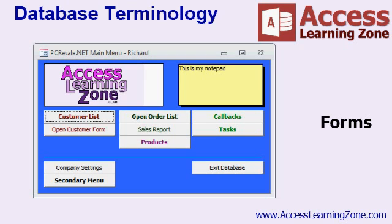Your forms can also contain drop-down lists, so users can select data. Command buttons allow us to perform tasks such as opening other forms or finding records. In fact, you can turn a form into a main menu for other forms. The benefits of working with forms go on and on, but essentially you'll build the interface with which users will work with your data out of forms.